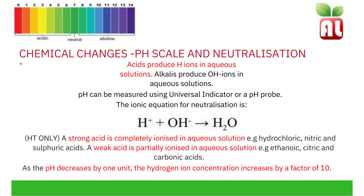pH scale and neutralization. The pH scale is a measurement of how acidic or how alkaline a solution is. The H in pH refers to the hydrogen ion concentration. All acids produce H⁺ ions in aqueous solutions. Alkalis produce hydroxide OH⁻ ions in aqueous solutions. pH can be measured using universal indicator or a pH probe. The ionic equation for neutralization is: H⁺ + OH⁻ → H₂O.